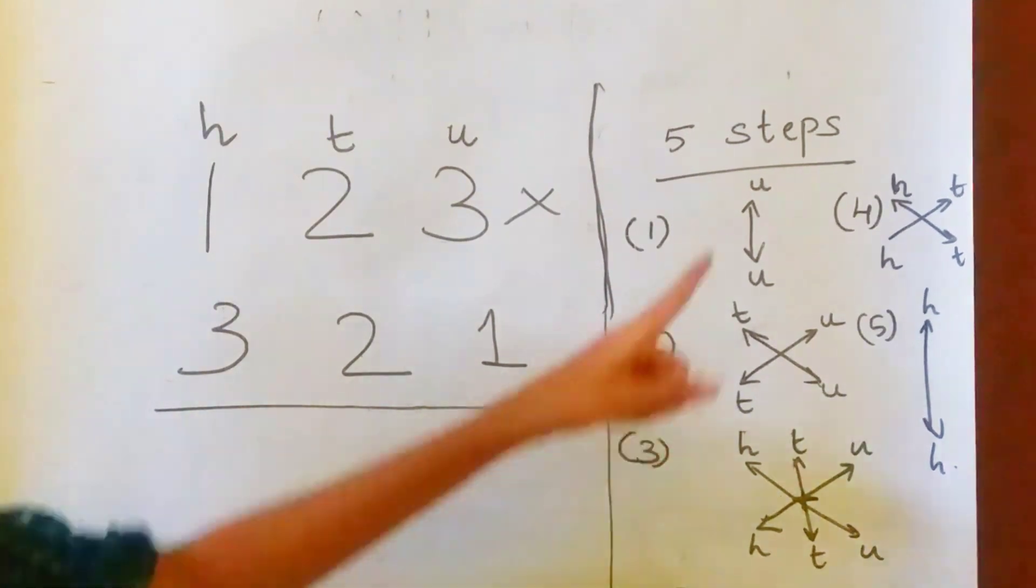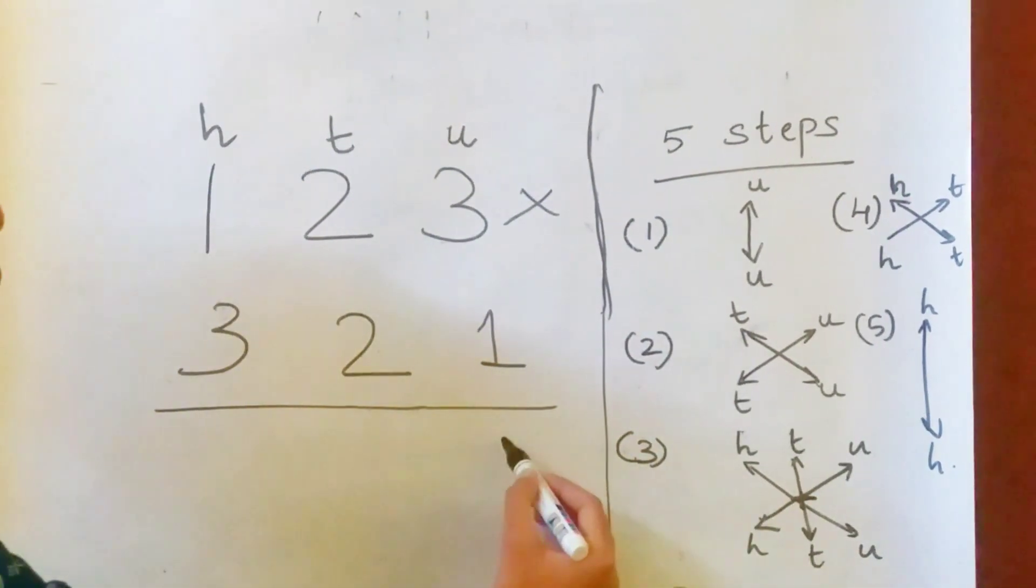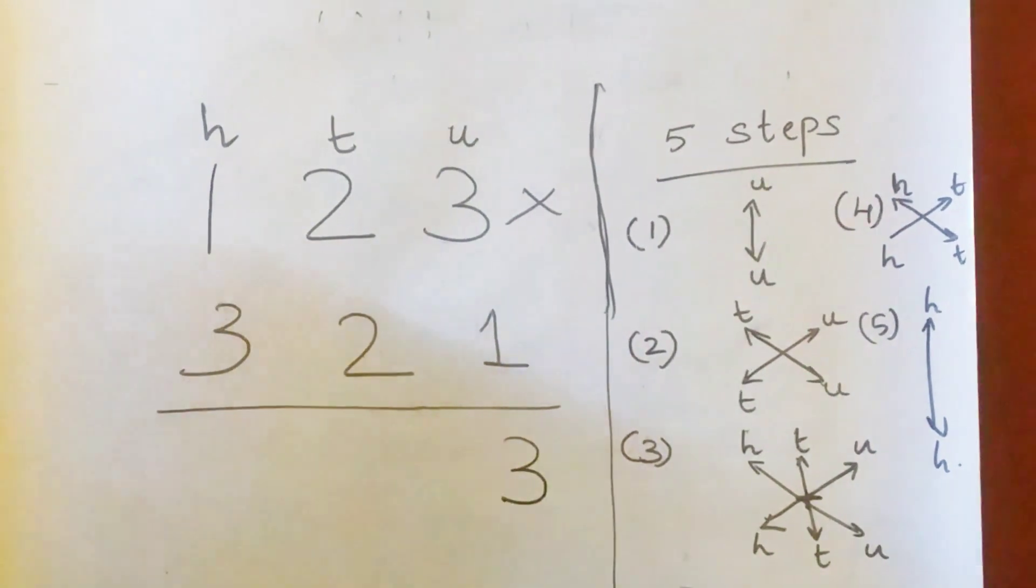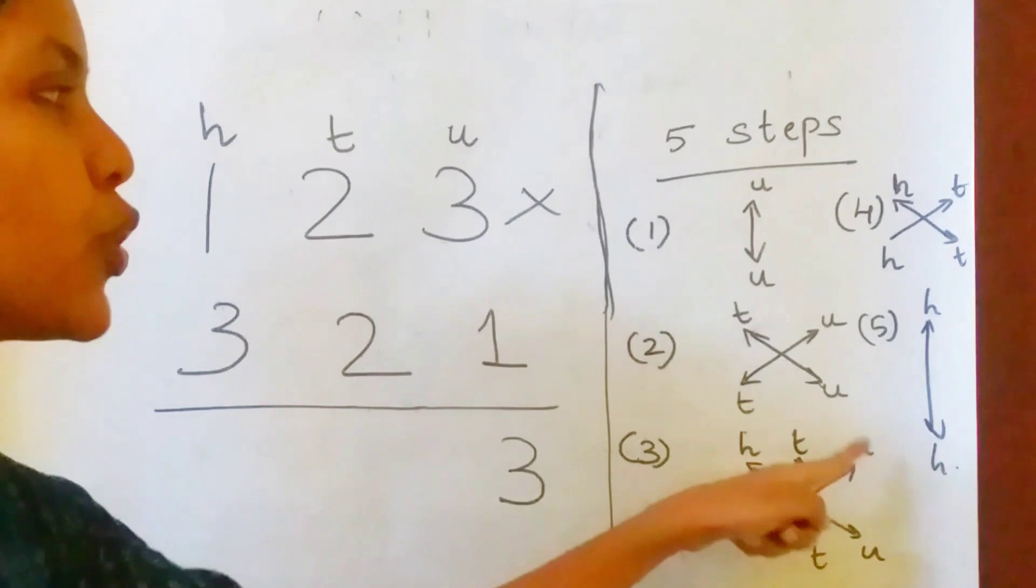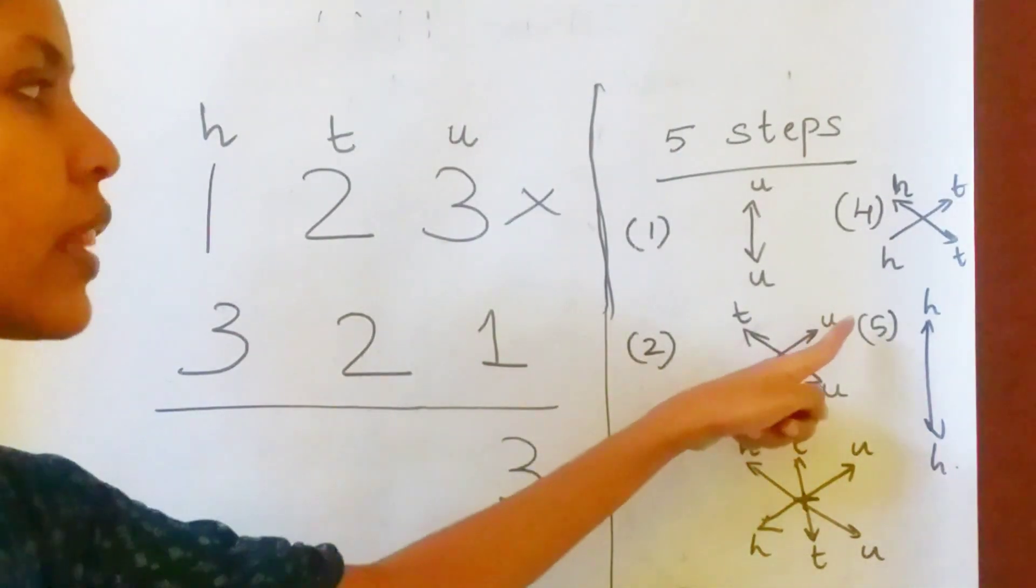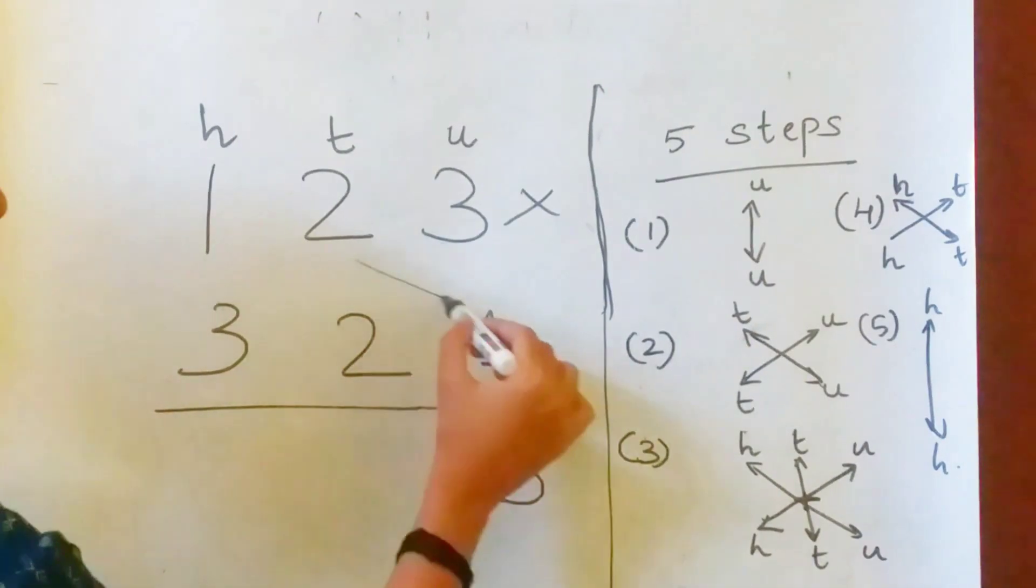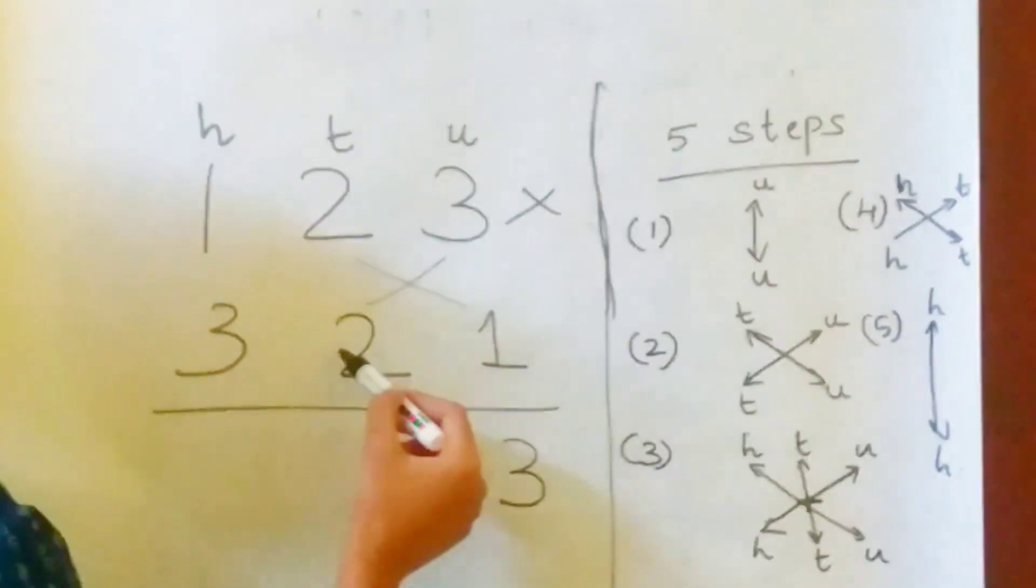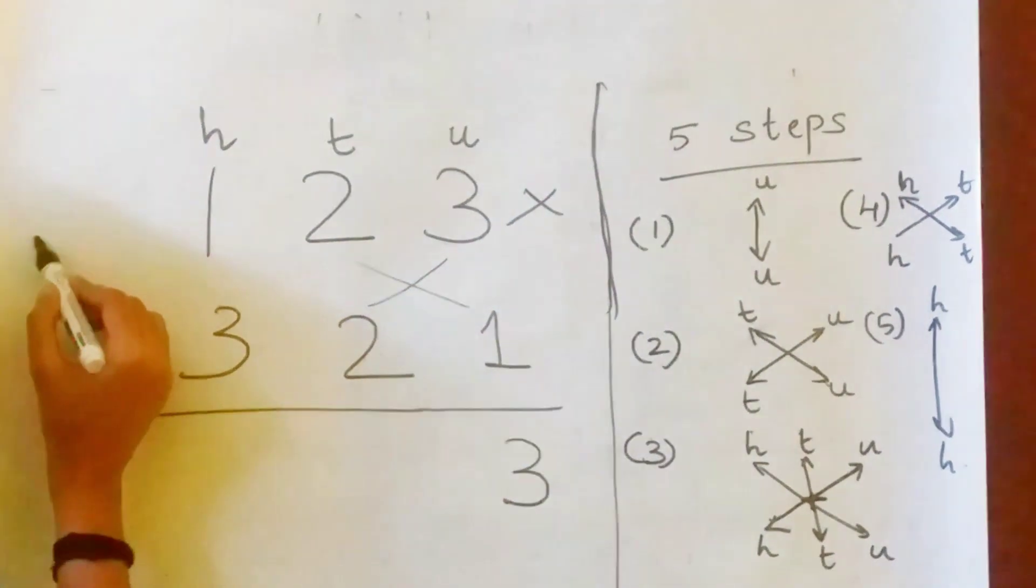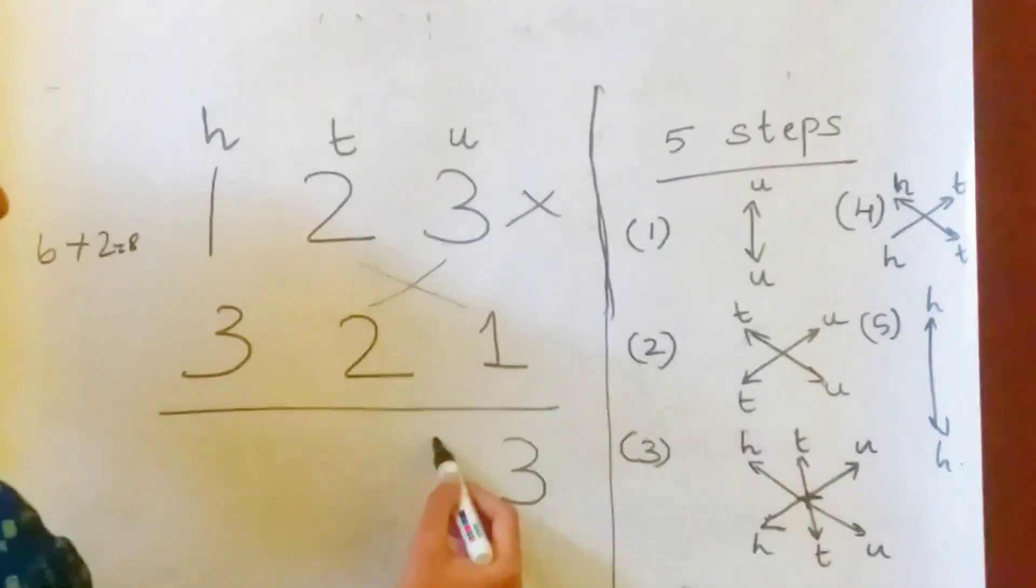Now see the first step. Units place into units place. So 3 into 1 which is 3. What is the second step? T into U, tens into units place. Then units place into tens place. And we are taking the sum of these numbers. So 3 into 2, 6, 3 into 2, 6 plus 2 into 1, 2 which is 8. 8 here.